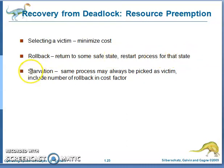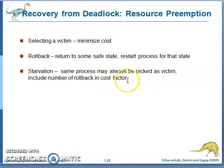In resource preemption, there may be a chance for starvation, meaning the same process may always be picked as victim. The number of rollbacks is included as a cost factor to address this. In summary, recovery from deadlock involves process termination — either abort all processes or abort one by one — and resource preemption, where you select a victim, roll back processes and resources to a safe state, with the risk of starvation.